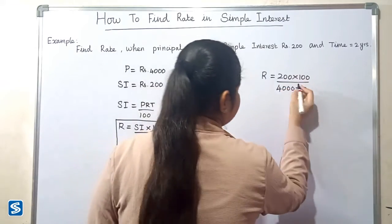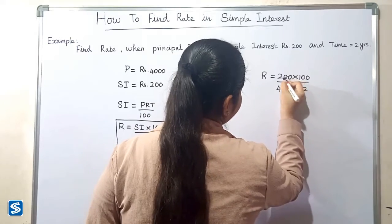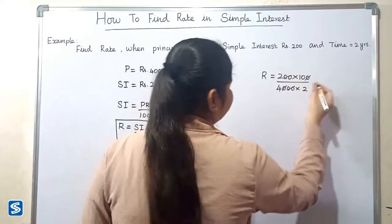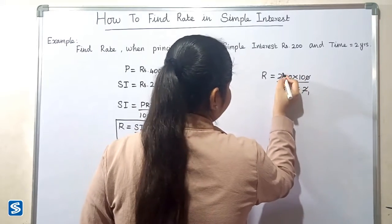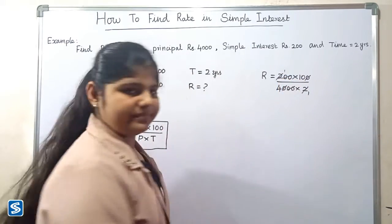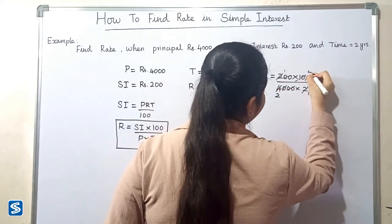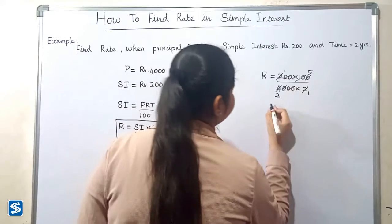Here 0 and 0 gets cancelled, here 2 and 2 gets cancelled. 2 twos are 4, 2 fives are 10, so 5 by 2.